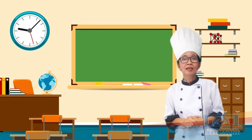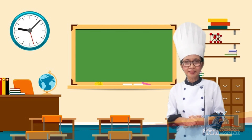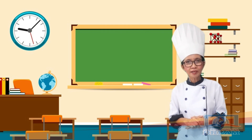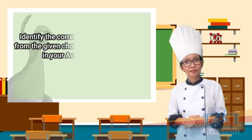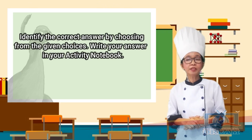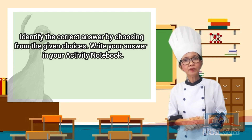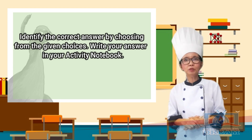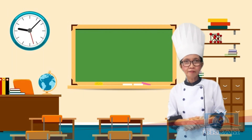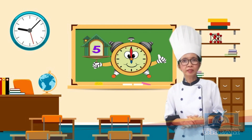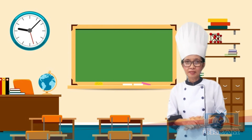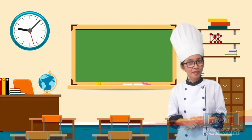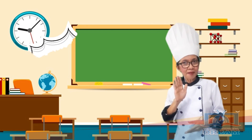If you are ready for our lesson, let us have a short activity — the 'Let's Try' part. Identify the correct answer by choosing from the given choices. Write your answer in your activity notebook. You have 5 seconds to answer each item, and when you hear a sound, that means your time is up.